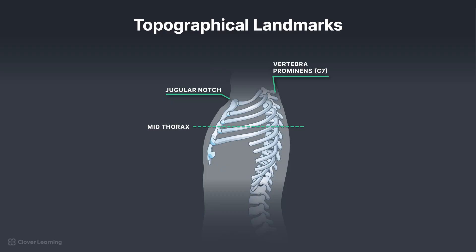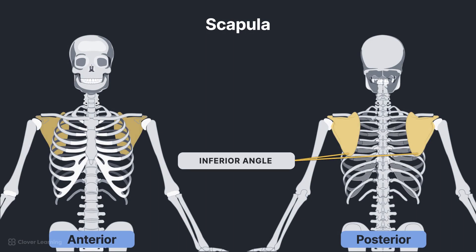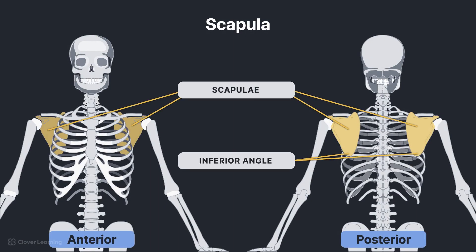The vertebral prominence is the spinous process of C7 and can be palpated on most patients by applying light pressure with the fingertips at the base of the neck. This can be helpful when positioning a patient for the posteroanterior, or PA, chest projection. The jugular notch is the deep notch, or depression, on the superior portion of the sternum below the thyroid cartilage. It can be easily palpated and is helpful when positioning a patient for anteroposterior, or AP, and lateral chest projections. The inferior angle of the scapula is the lowest projection of the shoulder blade, usually at the level of the axilla. It can be easily palpated, especially when standing behind the patient, and is helpful when positioning PA chest projections.